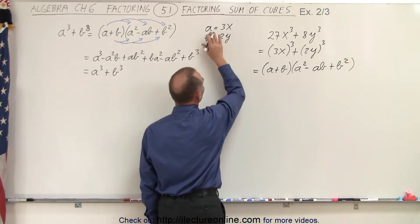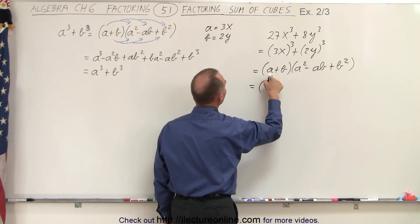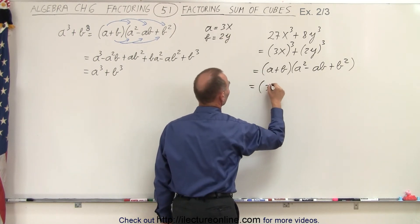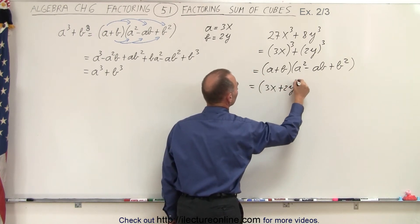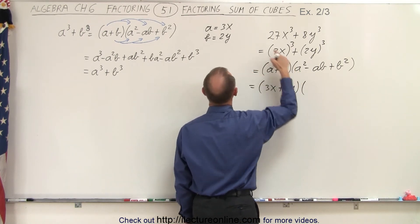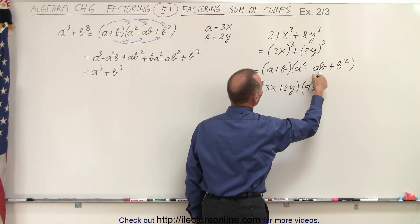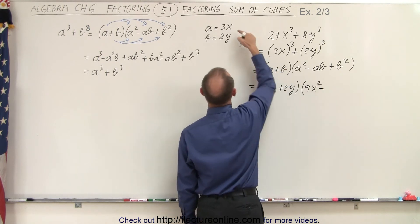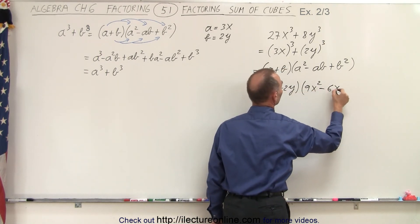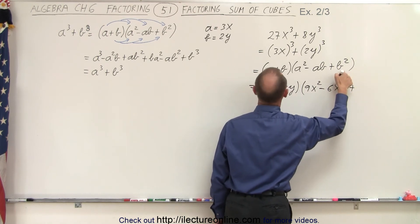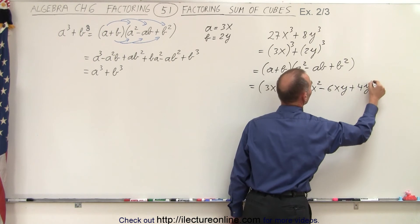And now we're going to substitute a and b, what they're equivalent to in here, so this is equal to a is 3x plus b, b is 2y, times a squared, which would be 3x squared or 9x squared minus the product of the 2, so minus a times b, that would be 6xy plus b squared and b is 2y, that would be plus 4y squared.